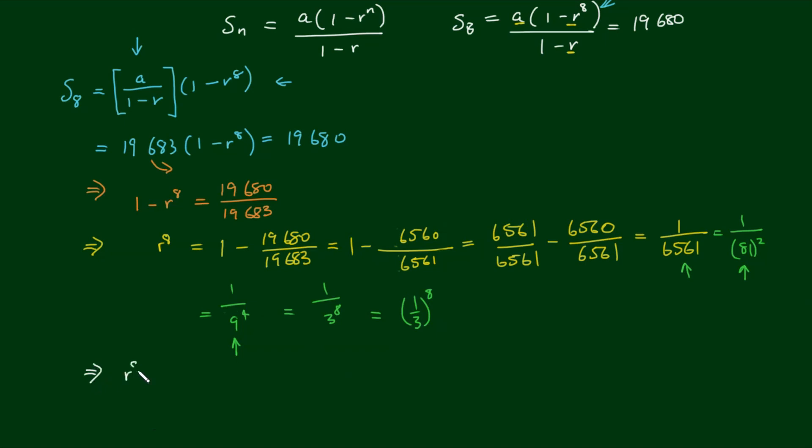So we have the expression r to the power of 8 equals 1 third to the power of 8, which implies then when we take the 8th root of r, and because we have an even power here, we must remember there are two possible answers.